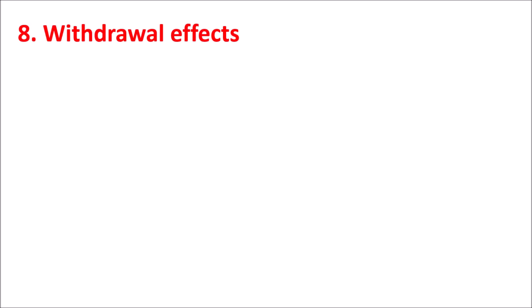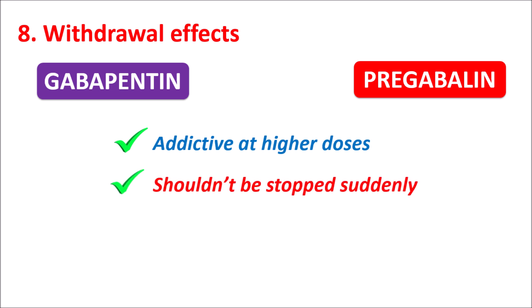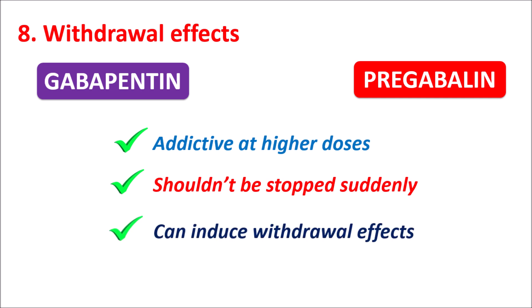The eighth point is withdrawal effects. Both Gabapentin and Pregabalin are addictive at higher doses and should not be stopped suddenly, as abrupt discontinuation can produce withdrawal effects. Therefore, both drugs should be slowly tapered in order to avoid withdrawal effects.